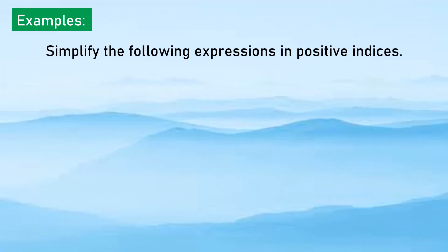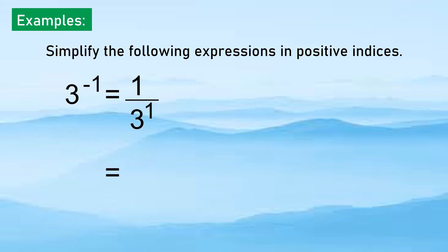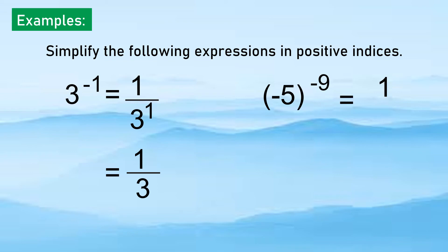Now let us have some examples for the negative exponent — simplify the following in positive indices. 3 to the negative 1 equals 1 over 3 to the positive 1, or simply 1 over 3. For negative 5 to the negative 9, we get the reciprocal of negative 5 raised to positive 9, which is 1 over (negative 5) to the 9th. Just get the reciprocal and make the exponent positive.